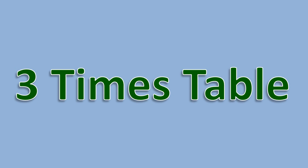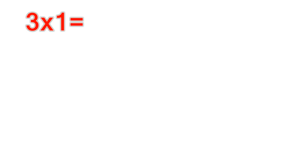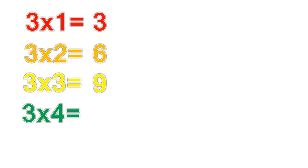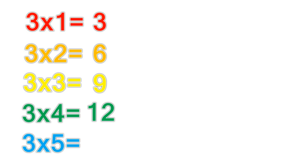3 times table. 3 times 1 equals 3. 3 times 2 equals 6. 3 times 3 equals 9. 3 times 4 equals 12. 3 times 5 equals 15.